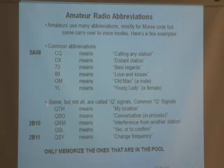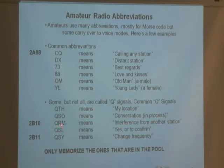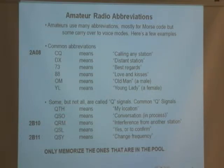Then they had some others called Q signals. QTH meant 'my location' — so my home QTH is on Palos Verdes, my current QTH is here in Monterey Beach. QSO means 'conversation in progress' — this is one they want you to memorize. QRM means interference from another station. So if I'm talking to you and we're being interfered with, accidentally or intentionally, by someone who's very close to us in frequency, it's causing some QRM.